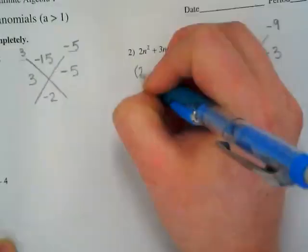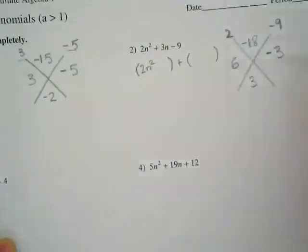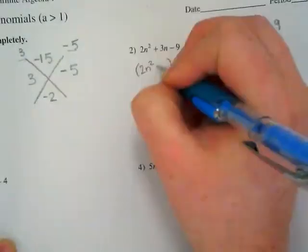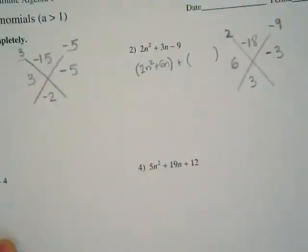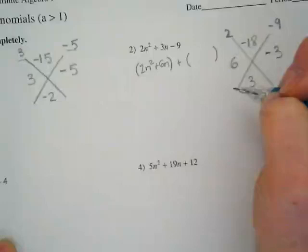I'm putting my 2n squared here, and I am adding 6n, because the 6 lined up with the 2. I should write this down.